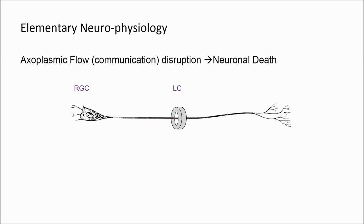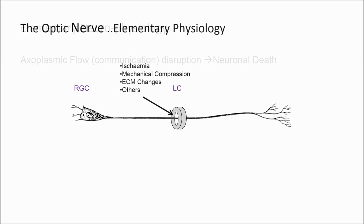This diagram shows a retinoganglionic cell which has to exit the eye through the lamina cribrosa and complete its path to terminate in the lateral geniculate nucleus. Retinoganglionic cell axonal damage in the optic nerve head occurs early in glaucoma; both retrograde degeneration and Wallerian degeneration may be involved.